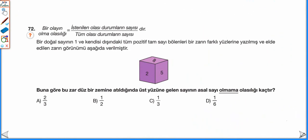72. sorumuza devam edelim. Bir doğal sayının 1 ve kendisi dışındaki tüm pozitif tam sayı bölenleri bir zarın farklı yüzlerine yazılmış ve elde edilen zarın görünümü verilmiştir. Buna göre bu zar düz bir zemine atıldığında üst yüze gelen sayının asal sayı olmama olasılığı kaçtır? Zar küp şeklinde olduğu için 6 yüzeyi vardır, dolayısıyla sayımızın 1 ve kendisi hariç 6 tane pozitif tam sayı böleni vardır. Bunların 3 tanesini biliyoruz: 2, 5 ve 8.